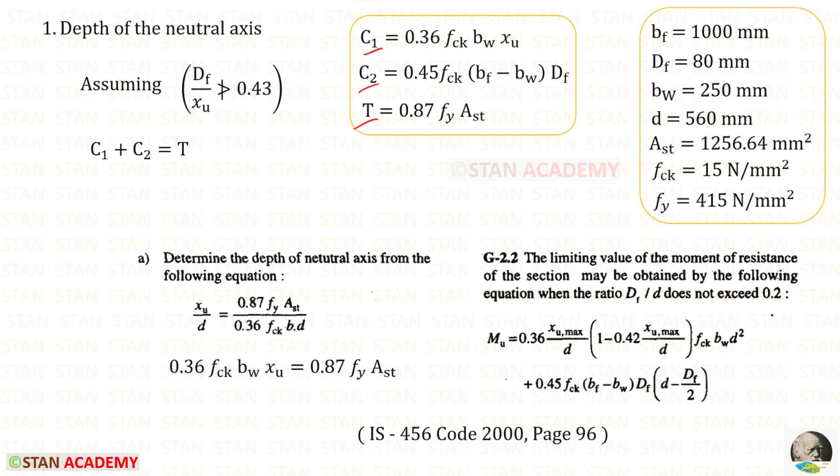So let us see how to take them from the code book as your shortcut. In this equation we can eliminate D and we can arrange like this. Instead of B, we have to apply Bw. This is C1 and this is T and this is C2.